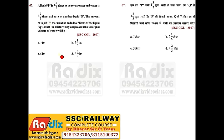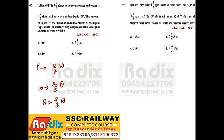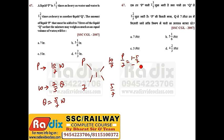Question 67. A liquid P is 1 and 3/7 times as heavy as water, so P is 10/7 times water. Water is 1 and 2/5 times as heavy as another liquid Q, so water is 7/5 times Q, meaning Q is 5/7 times water. Find the amount of P to be added to 7 liters of Q so the mixture weighs as much as equal volume of water (density = 1). Solving: P/7 = (1 − 5/7) / (10/7 − 1) = (2/7)/(3/7) = 2/3, so P = 14/3 = 4 and 2/3 liters. Answer is option D.